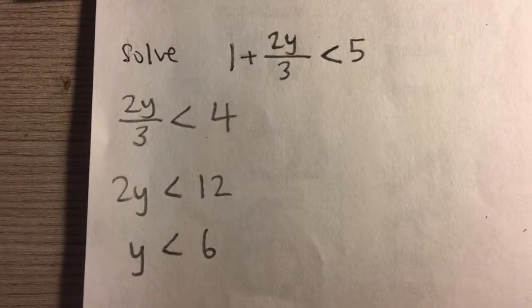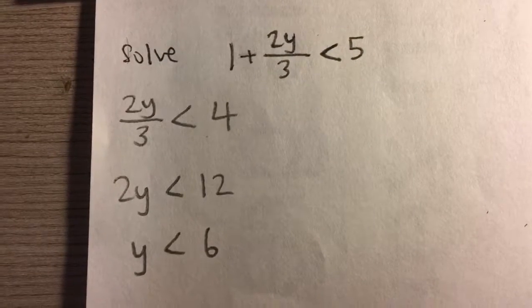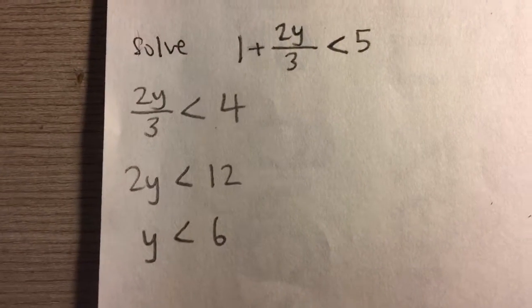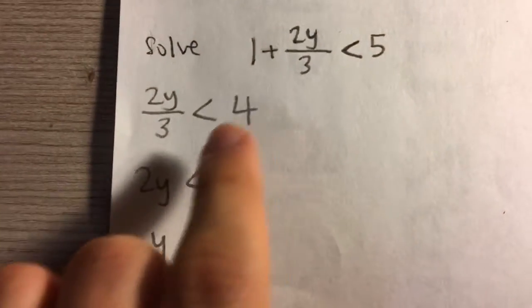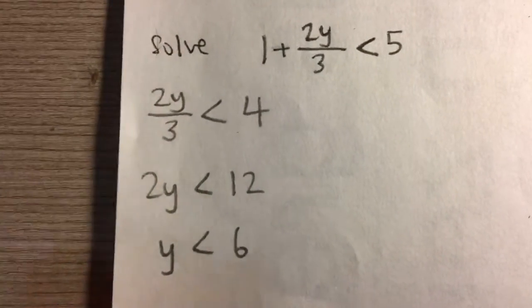Solve the inequality 1 plus 2y over 3 is less than 5. How are we going to solve this? It's very similar to if it was an equal sign, but it's just a less than sign. Everything is pretty much the same.